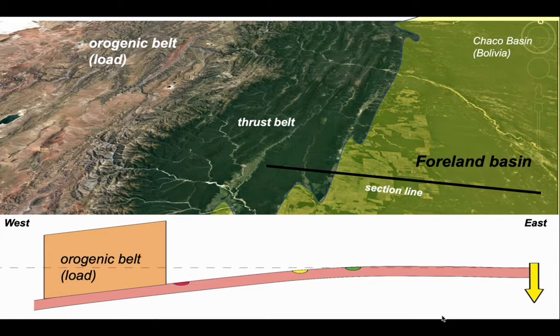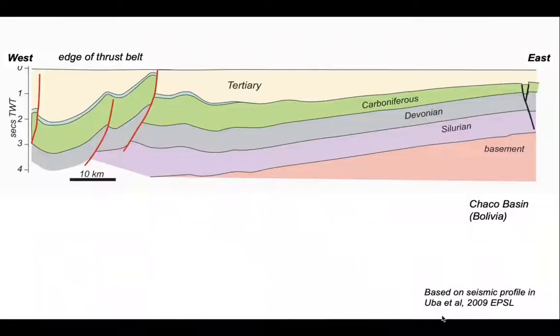So let's look at how this is represented geologically on a cross section through the edge of the foreland basin and just into the thrust belt. So a number of features that we can pick out. First of all, the tertiary rocks at the top there are the fill to the foreland basin. And beneath it, we can see the Carboniferous, Devonian, Silurian and basement rocks that are inclined down to the west towards the Andes.